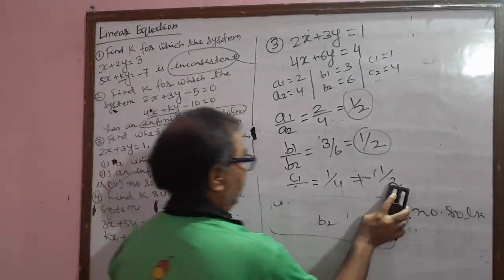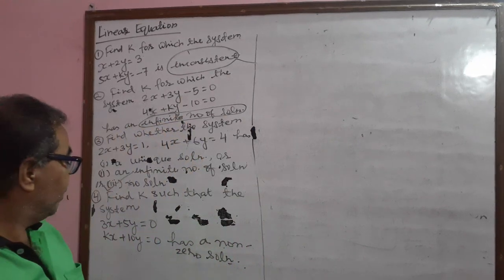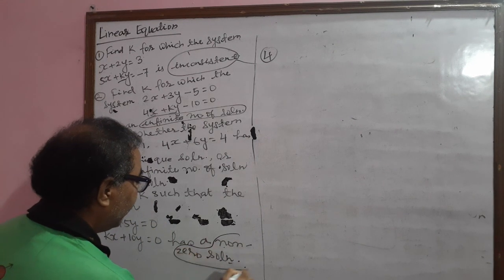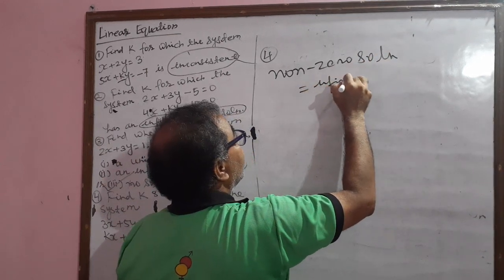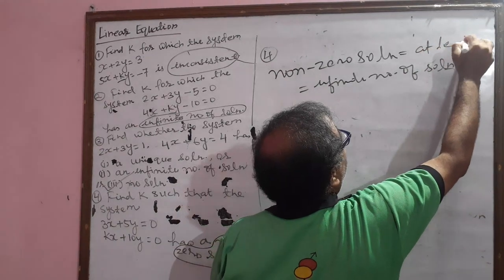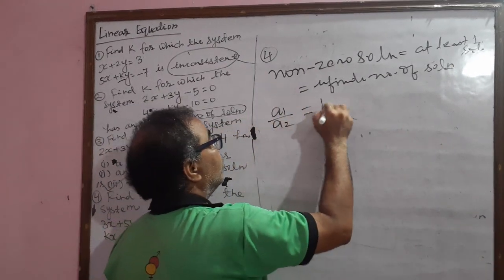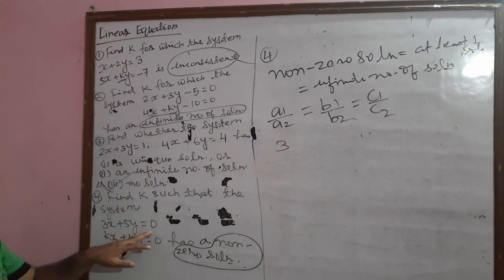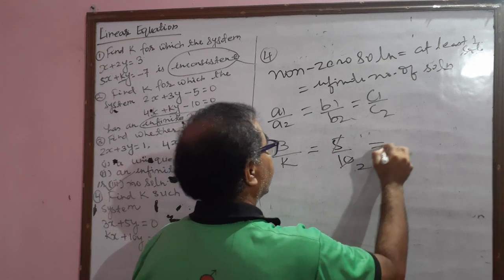Coming to question number 4: find the value of k such that the system has a non-zero solution. Non-zero solution means an infinite number of solutions — at least one solution. The equations given are 3x plus 5y equal to 0 and kx plus 10y equal to 0. Applying the condition a1 by a2 equal to b1 by b2 equal to c1 by c2, we get 3 by k equal to 5 by 10, giving k equal to 6.